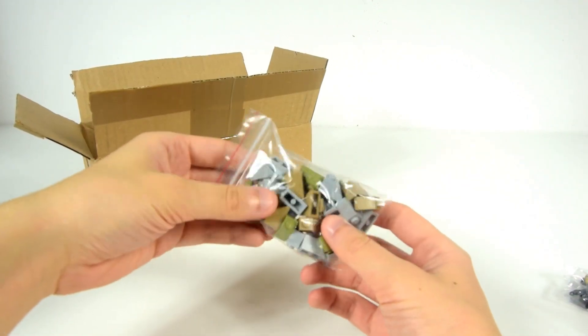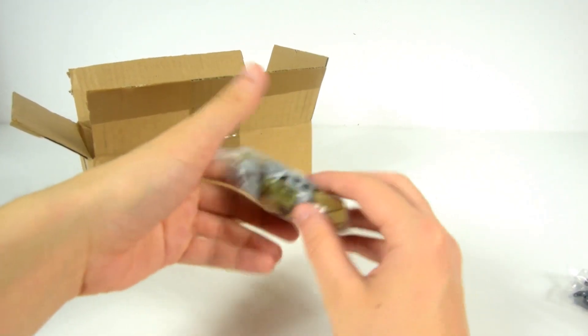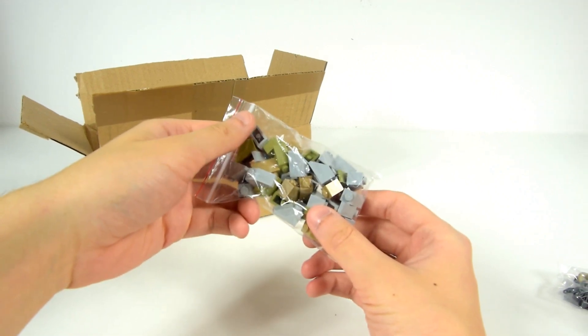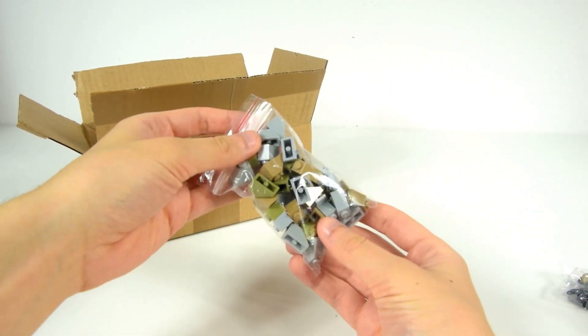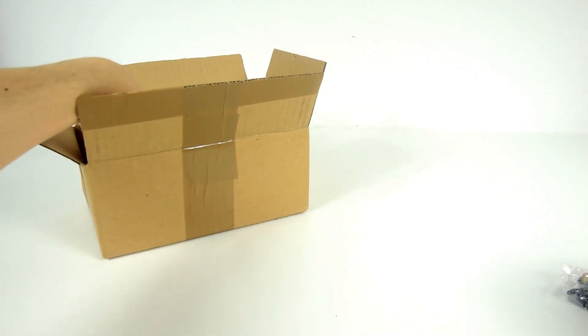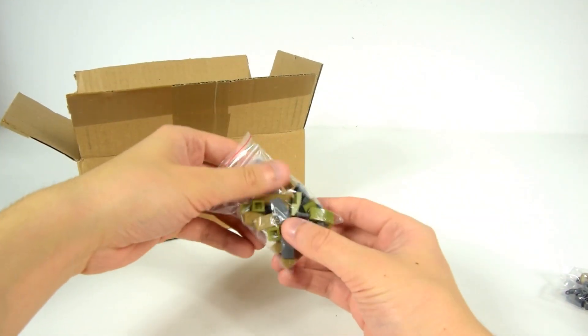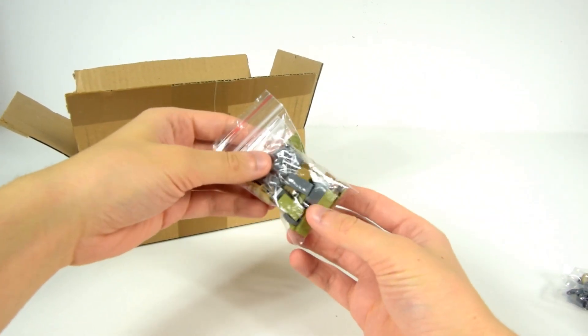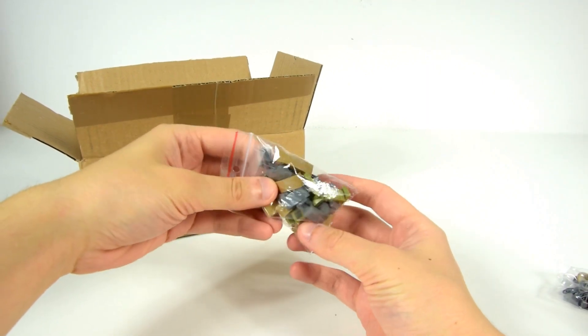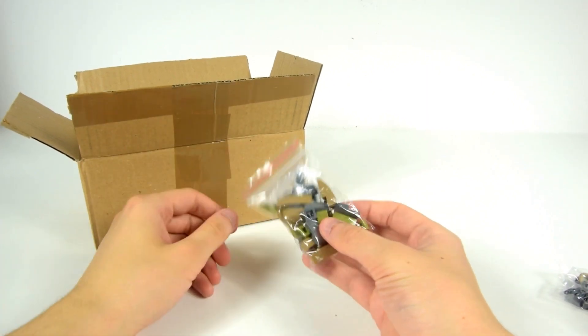Then we have 1x2 slope bricks in light bluish grey, olive green and dark tan. Next, great parts for rockwork. More slopes, 1x2 dark bluish grey and olive green. Also 1x3 dark tan slopes.